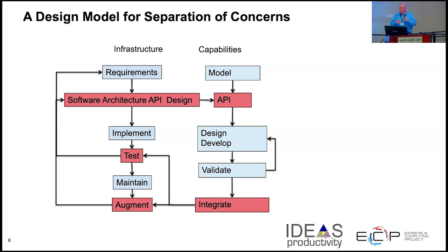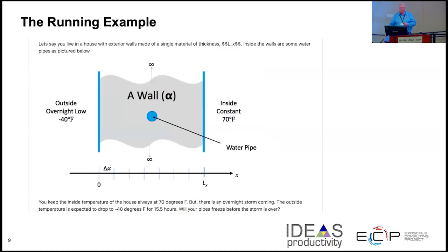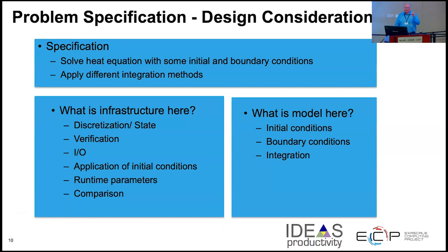Let's take a very simple example: you have a wall with a water pipe in it, outside it's minus 40 and inside it's a nice comfortable 70 degrees, and you want to know if your water pipe is going to freeze. So we're going to have a simple one-dimensional heat equation. We want to identify how we would divide this up — we have a specification to solve the heat equation with some initial boundary conditions, and we want to apply different integration methods to see how they work. The infrastructure is the discretization over that wall, the ability to verify, I/O, applying initial conditions.